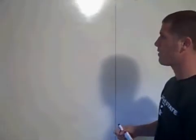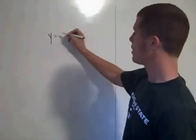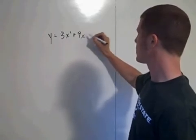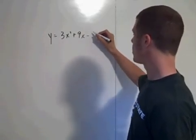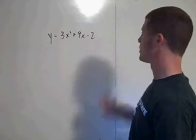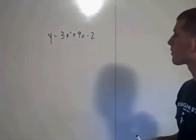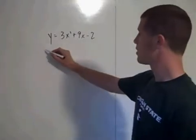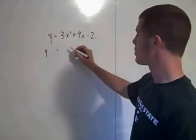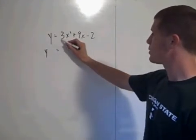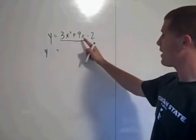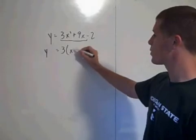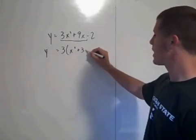Suppose you have y equals 3x squared plus 9x minus 2. You're going to group the first two terms, then factor out the 3 so that your a value becomes 1 on the inside. That gives you 3 times x squared plus 3x, and then you'll complete the square with those two terms.